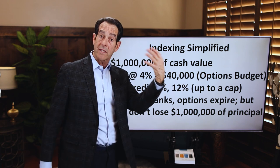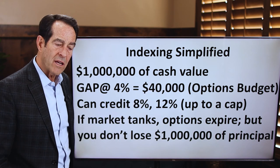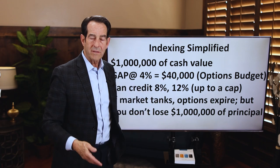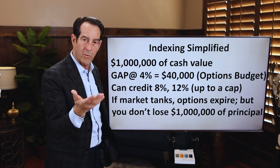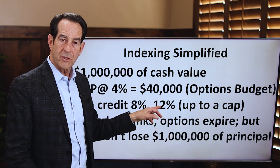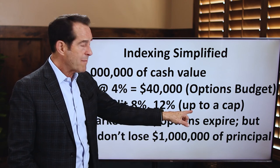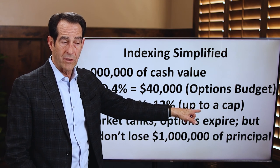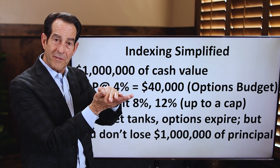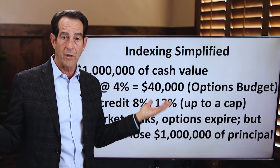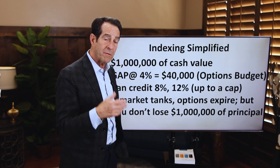They buy upside options in the S&P — they are the number one purchaser of options in the world and do this hourly. At the end of the year, if the S&P went up 8%, the $40,000 of options gave them the wherewithal to pay you $80,000 on your million. If it went up 12%, they may pay you $120,000. They may only pay you up to a cap — maybe 12%, or some years caps have been 16% or 25% — because of the price of options. But the other benefit is that if the market were to lose 20, 30, or 40%, the options simply expire worthless, and your money is still safe. You didn't lose one dime of your principal. As Will Rogers once said, people get more concerned about the return of their money instead of the return on their money.